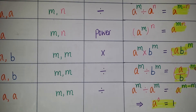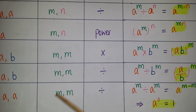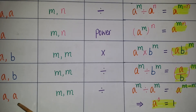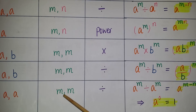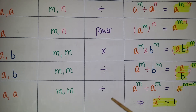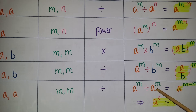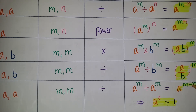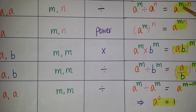The sixth law: if the bases are the same (a, a) and the exponents are also the same (m, m) and we divide, then a to the power of m divided by a to the power of m equals a to the power of m minus m. Using the subtraction law, m minus m is 0, so a to the power of 0 is equal to 1.